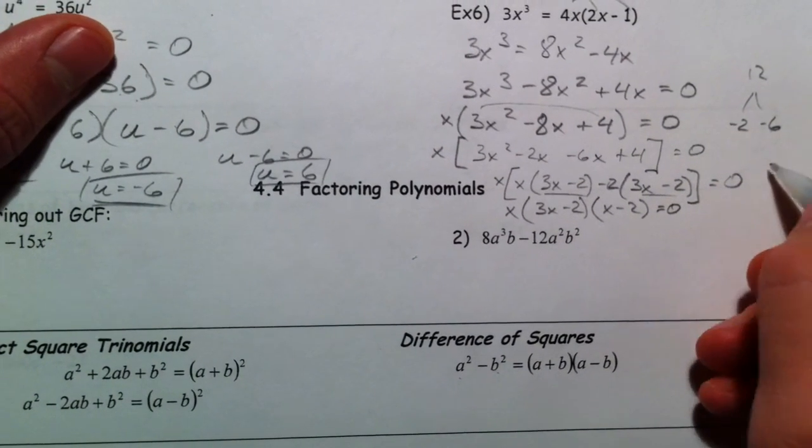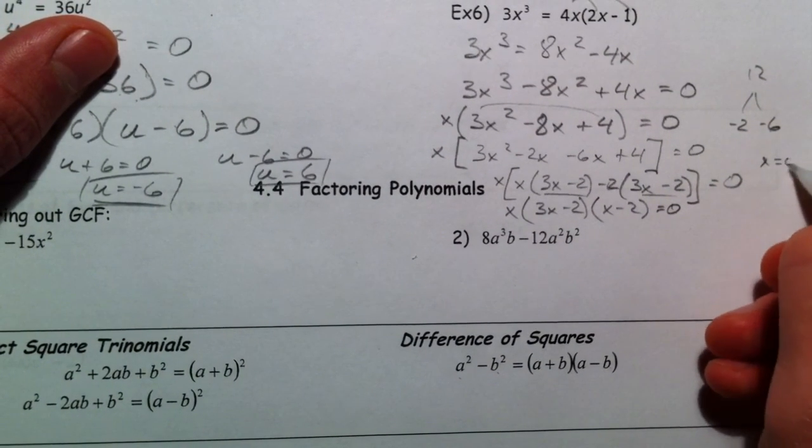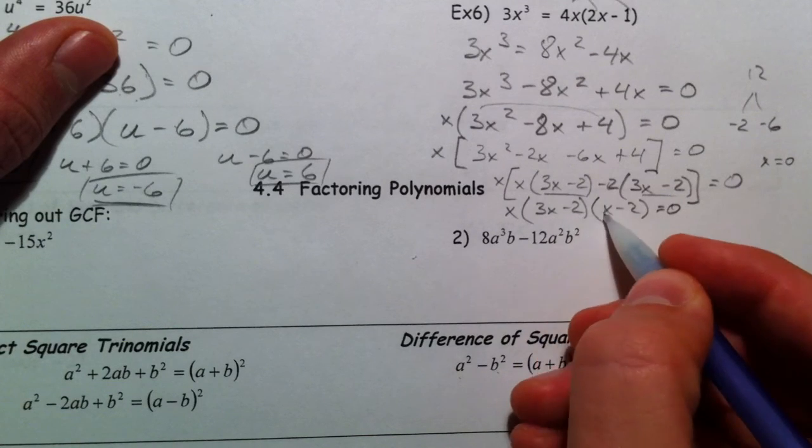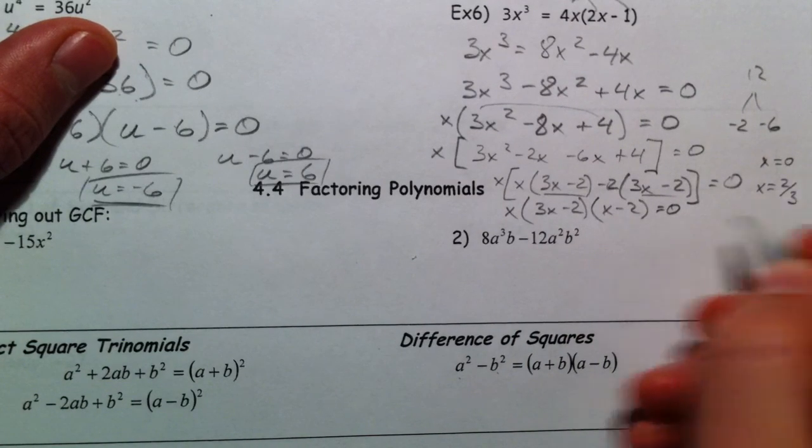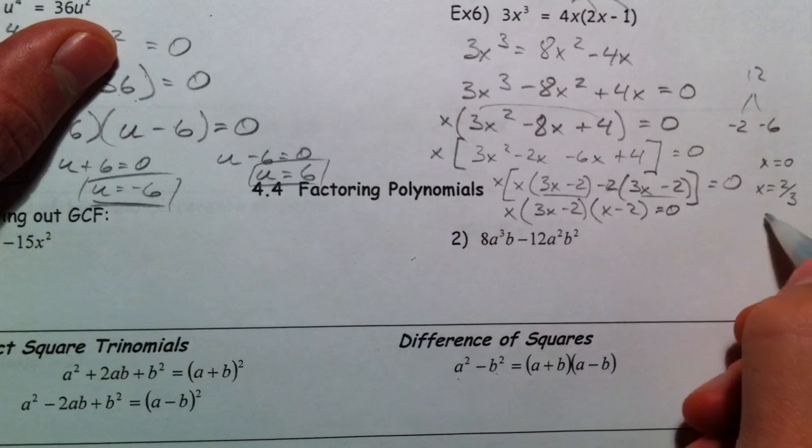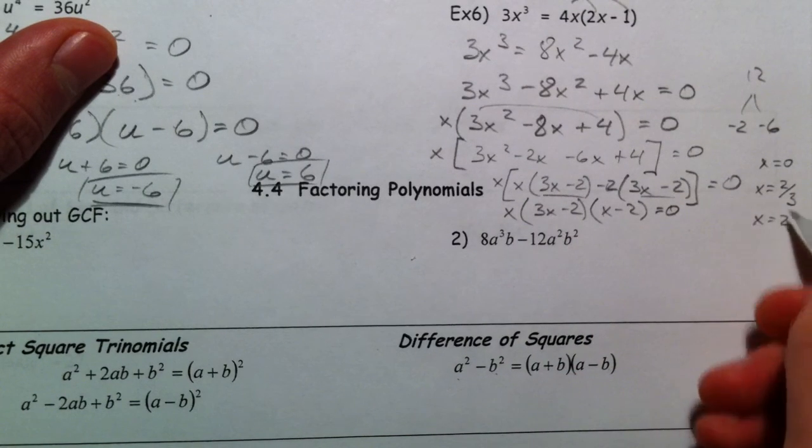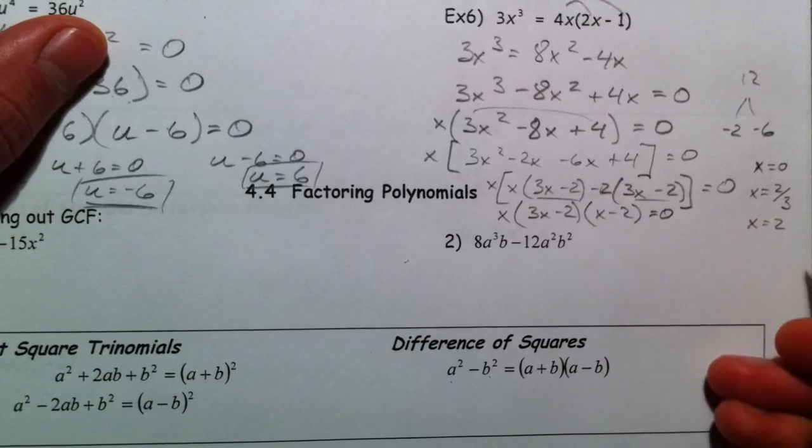So, then we have x equals 0. x equals add 2, divide by 3. So, x equals 2 thirds. And x equals, when you add the 2, x equals 2. And there you have it. 3 answers.